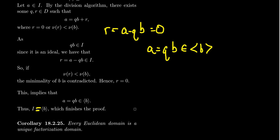So every ideal in the Euclidean domain is in fact a principal ideal. That then proves it's a principal ideal domain.